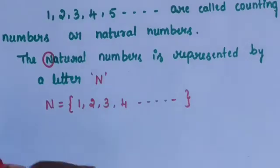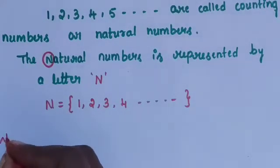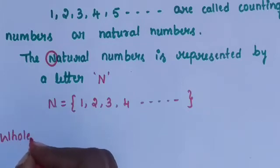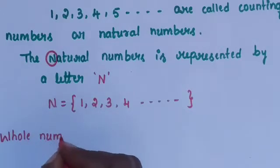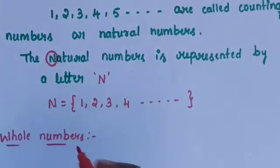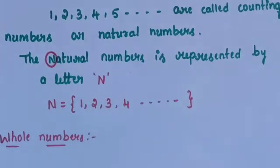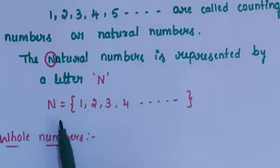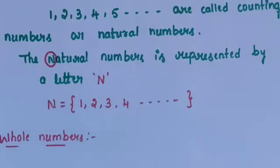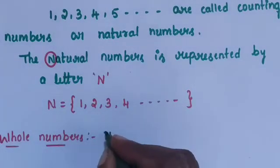Next is the whole number. Natural number N is equal to 1, 2, 3, 4, and so on. Including natural numbers as well as 0, then it is called whole numbers.